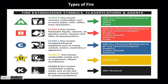Types of fire: fires are classified as A, B, C, D, or K based on the type of substance that is the fuel for the fire. Class A fires involve ordinary combustibles such as paper, trash, some plastics, wood, and cloth. A rule of thumb is: if it leaves ash behind, it is a Class A fire.